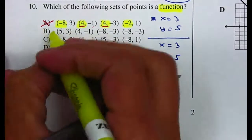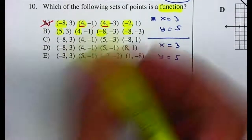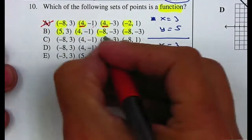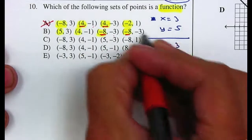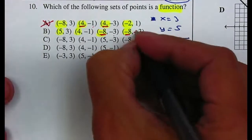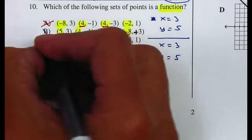If we look at letter B, we have a 5, a 4, a negative 8, and a negative 8. So we cannot have a negative 8 give you a negative 3, and then the next time you plug in, let's make that a positive 3. You cannot end up with a positive 3 the next time. So that's not a function.